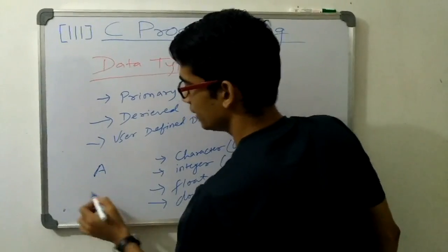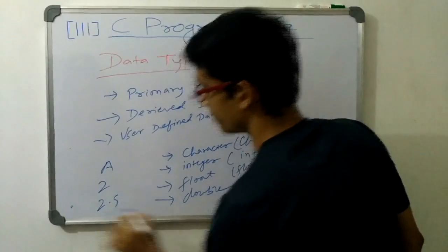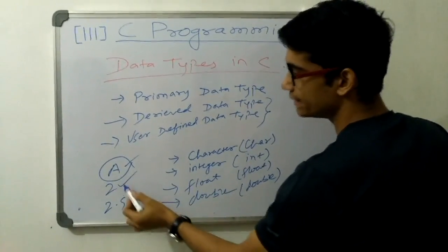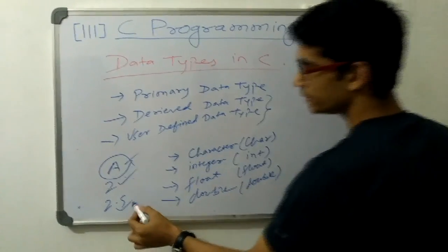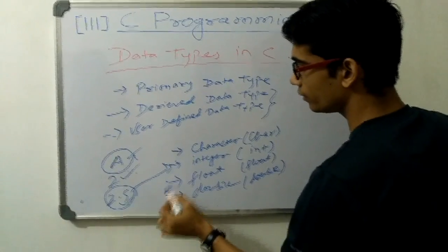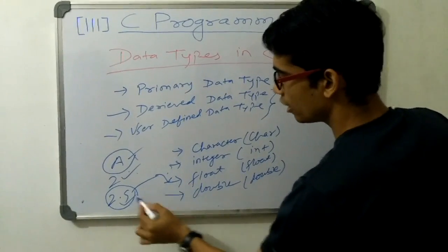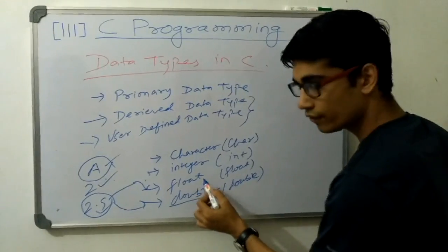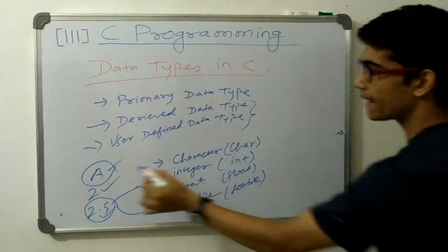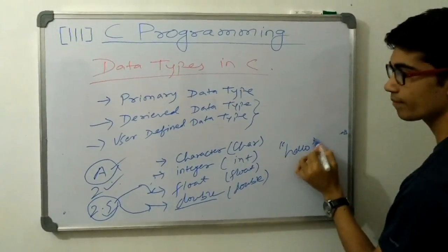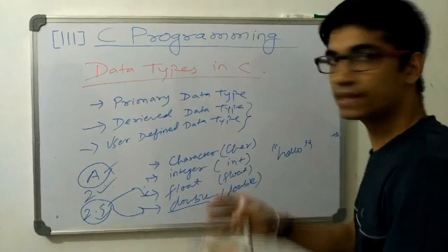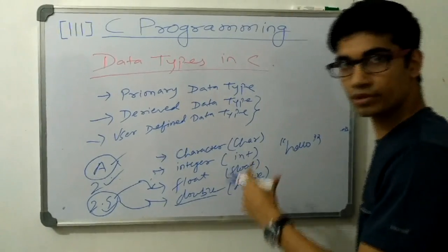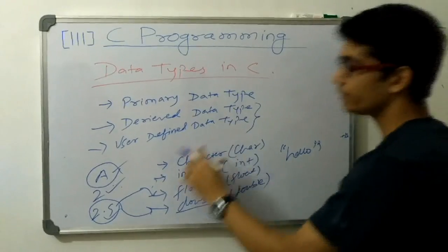Suppose we say A — this is a character type of data. If we say 2 — this is an integer type of data, an integer constant. If it is 2.5 — this is a decimal value, so it will come under float or double. The difference is that the double data type will have a larger range than float. A collection of characters, say hello — this is a string. C has given us features to decide the data types and we will see how to use them in manipulating our program or input of data.